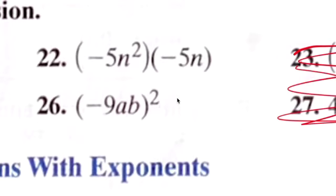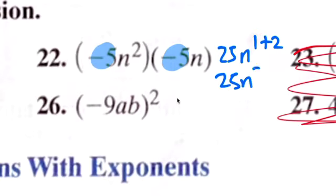You multiply these first, get twenty-five, and then n to the first plus the second, so your answer is 25n to the third. When you're multiplying, you add the exponents.